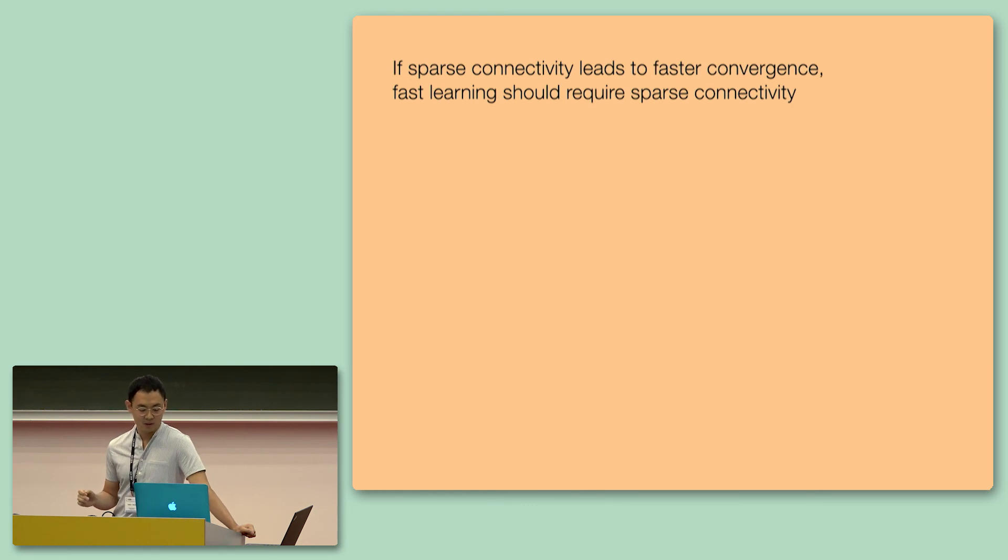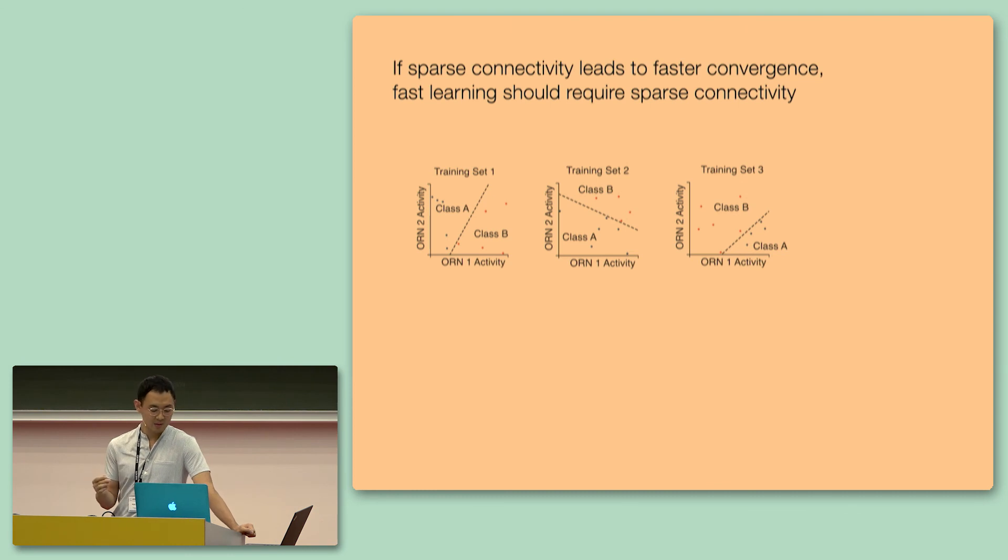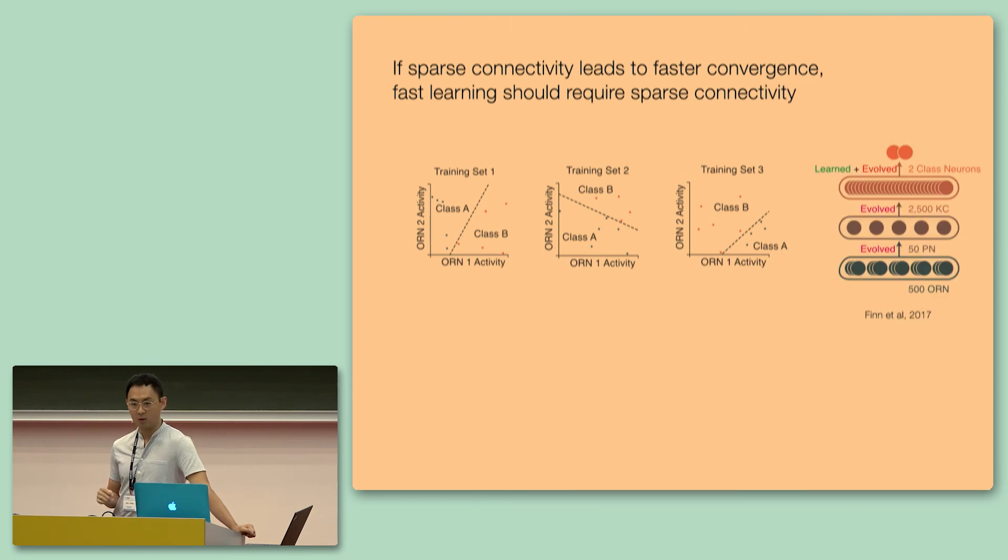This also leads to a further prediction, which is, if sparse connectivity leads to faster convergence, then fast learning should also require sparse connectivity. And in order to test this, instead of giving it one task, we now employ a meta-learning framework where we give multiple tasks in sequence. Except the difference is that these tasks only contain a few examples of each odor. So this is really a few-shot learning, where we give the network a few examples of odors, where every single task has a random classification boundary, and it's supposed to learn to generalize according to these few odor examples onto new odors. And we've employed a pretty recent meta-learning framework called model-agnostic meta-learning, or MAML, by Chelsea Finn and colleagues at Berkeley.